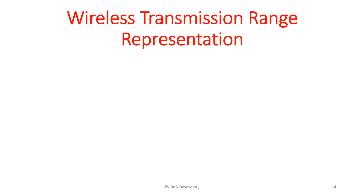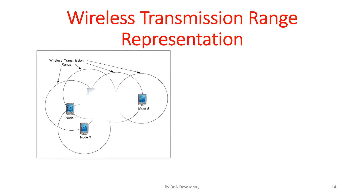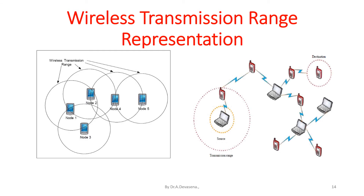A wireless transmission range representation is shown here. The circle over the nodes indicates that wireless transmission range occurs between the various nodes available in a particular area. In another representation, we have a source as well as a destination, and the diagram shows how information is passed between the source and destination.